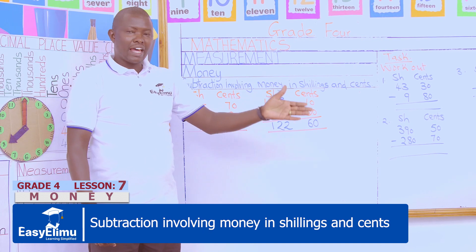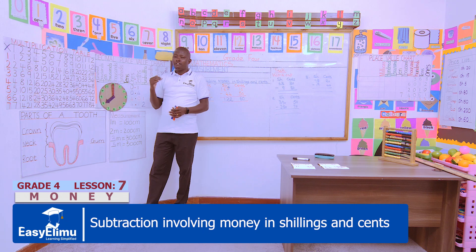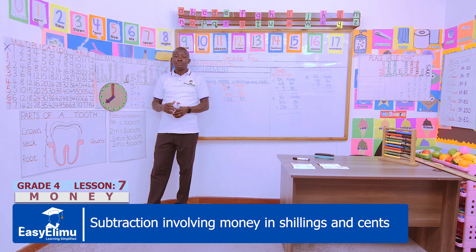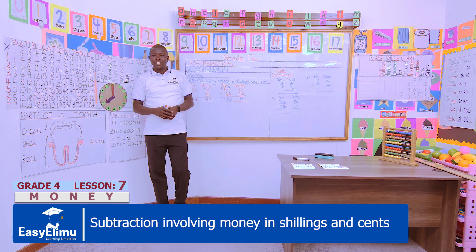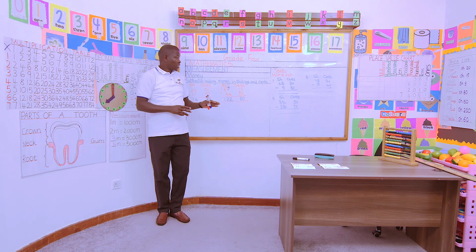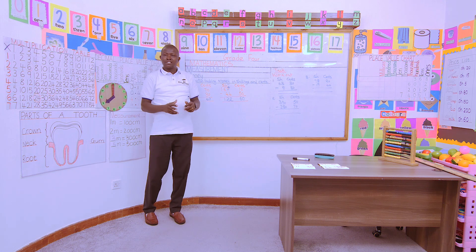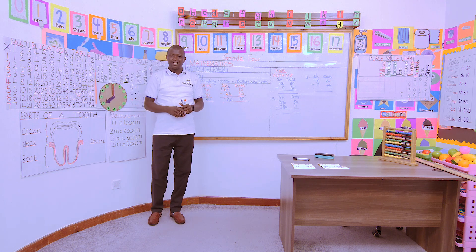You can use either an abacus to help you solve very fast, or the place value chart. With this, we have reached the end of our lesson. Remember to do more practice at home on subtraction involving money in shillings and cents. See you in the next lesson.